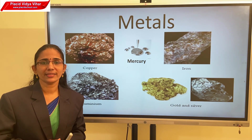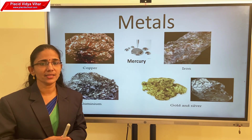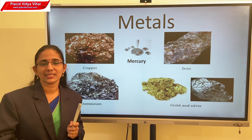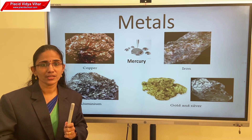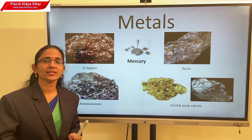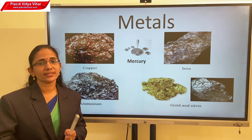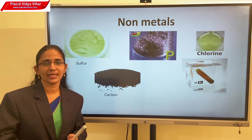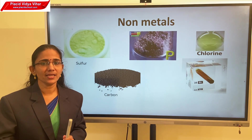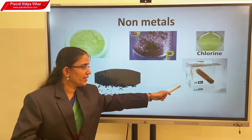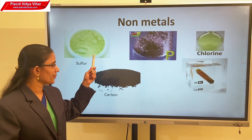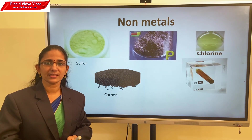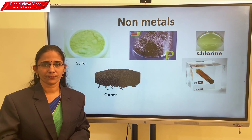These metals usually exist in solid state. Most of the metals exist in solid state, but one metal exists in liquid state — that is mercury. Mercury exists in liquid state and is used in thermometers. Non-metals mainly exist in solid and gaseous states, and one non-metal exists in liquid state — that is bromine.